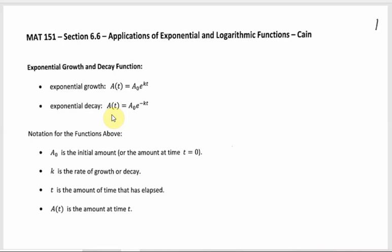With decay, you have the negative k, and with growth, you have the positive k. That's the only difference — it's the same overall setup, really the same formula. k is supposed to be the rate of growth or the rate of decay. When that's negative, the more time has elapsed, the smaller e to the negative kt is going to be. That's how you get the decay to work out correctly. With growth, you have a positive exponent, so as t gets bigger, the exponent gets bigger and the whole expression gets bigger — that would be growth.